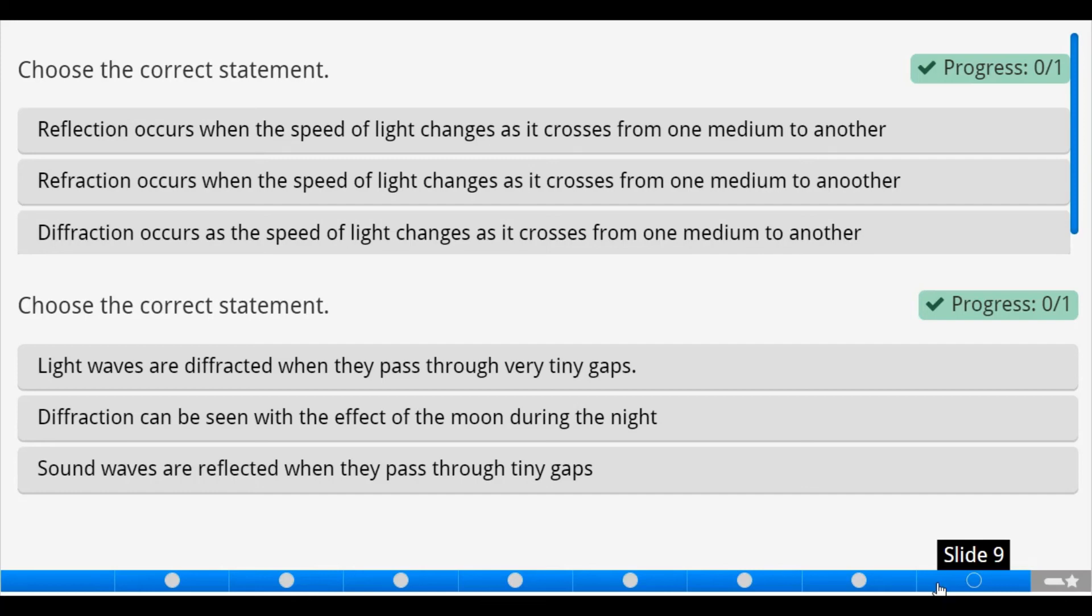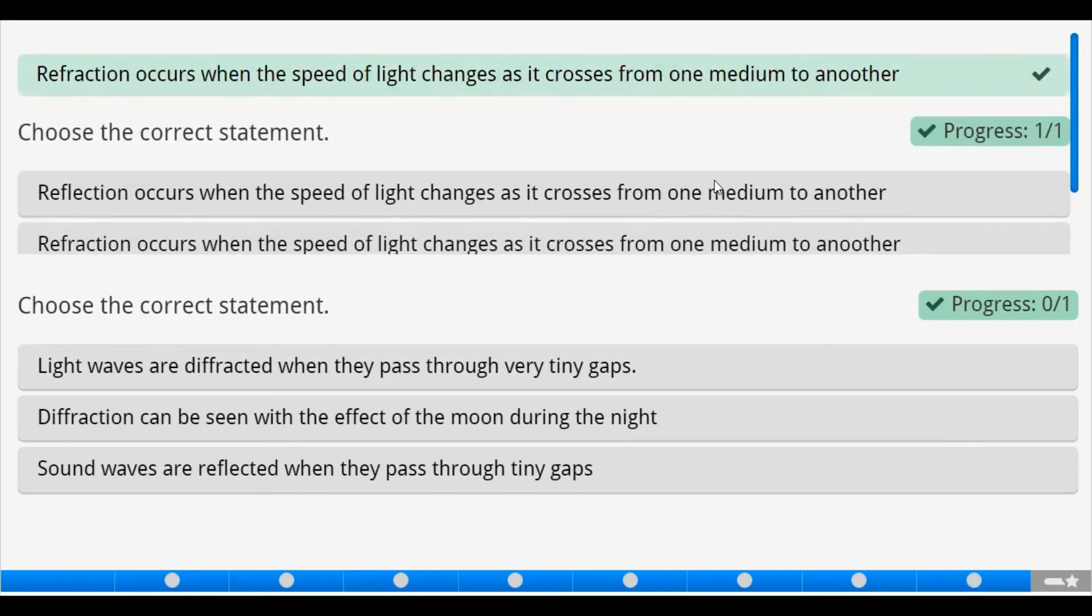We have reflection occurs when the speed of light changes as it crosses from one medium to another. That statement is false. Refraction occurs when the speed of light changes as it crosses from one medium to another. The statement is correct. Let's deal with the third one. Refraction occurs as the speed of light changes, it crosses from one medium to another. This definition for diffraction is wrong. So, the definition for refraction is correct. So, we pick it and check. That is it.